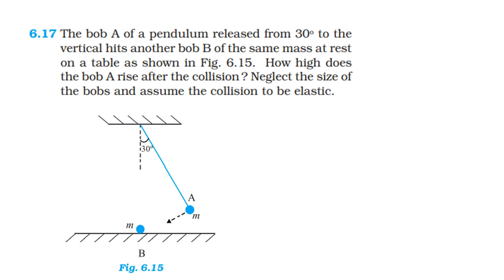Body B is initially at rest. Body A swings down and acquires a certain velocity. Since body B is at rest and body A has a certain velocity before collision, and the two masses are equal, the velocity is completely transferred.